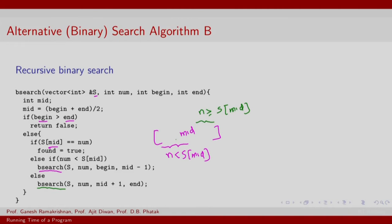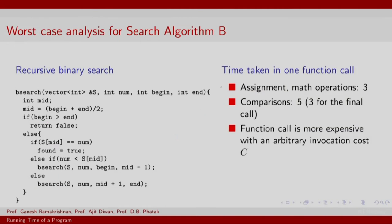So what is the analysis? The time taken in one function call is as follows. If you count the number of math operations that get invoked, there is this mid, there are a couple of operations where you look for equalities or inequalities that comprise comparisons. There are also some assignments. The operation, math operation and assignment could be counted separately. So found, for example, is an assignment. There are three exactly three assignments slash math operations, the remaining amount to comparisons.